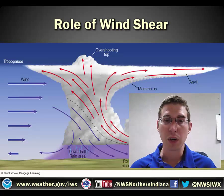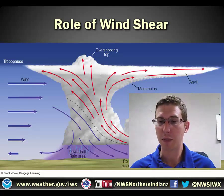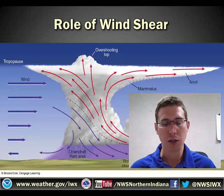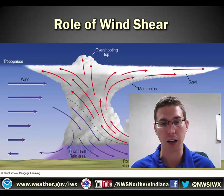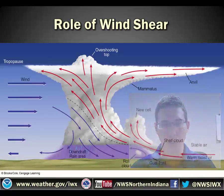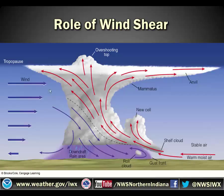We spoke earlier about wind shear — what type of impact does that have? Well, that actually will help a storm last longer than those 30 minutes rather than cutting off its own inflow, and that's by tilting the updraft. When the updraft is tilted, it no longer gets cut off by the downdraft. The downdraft comes in and actually helps to feed the updraft to continue to create new cells.